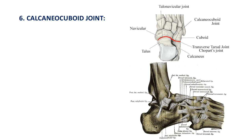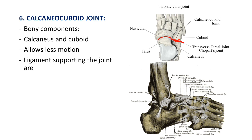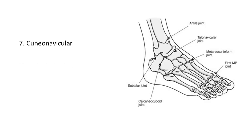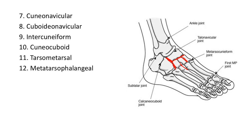The calcaneocuboid joint is formed between the calcaneus and the cuboid bone, with very little motion and firm ligamentous support. Other joints include the cuneonavicular joint between the navicular and cuneiforms, the cuboidonavicular joint, intercuneiform joints, and the cuneocuboid joint. There is also the tarsometatarsal joint between tarsal and metatarsal bones, the metatarsophalangeal joint, and the interphalangeal joint.